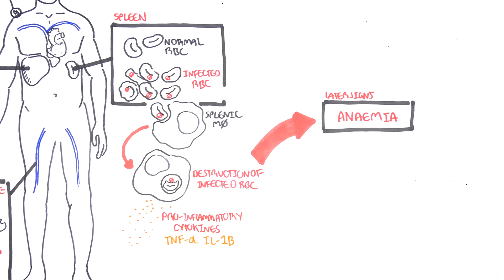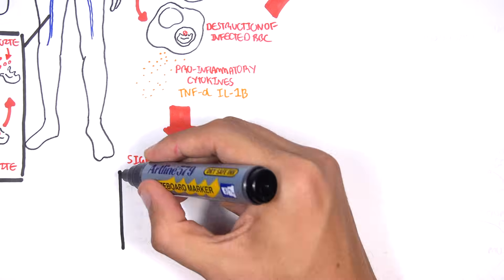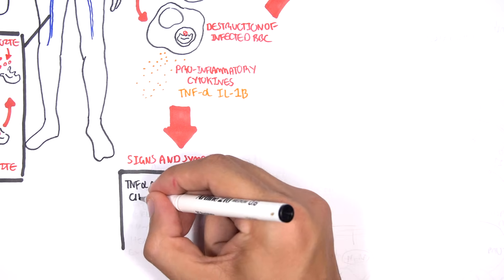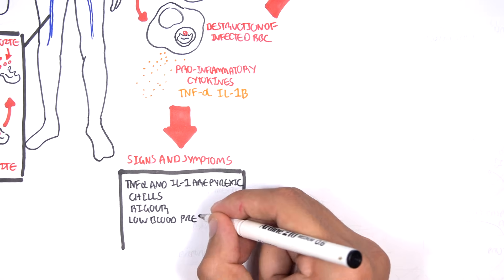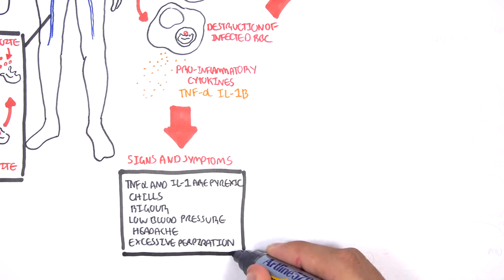These pro-inflammatory cytokines are released in a cyclic manner. These cytokines cause the fever, they are pyrexic, which is associated with signs of malaria illness, such as chills, rigor, low blood pressure, headache, excessive perspiration, sweating basically, and hyperpyrexia. These pyrexic cytokines also cause impaired erythropoiesis, which contribute to the anemia we see in malaria.